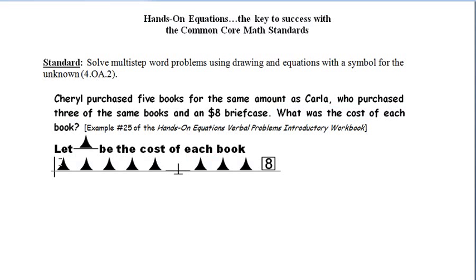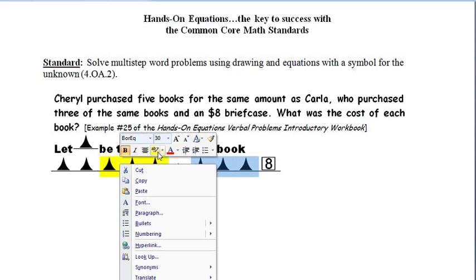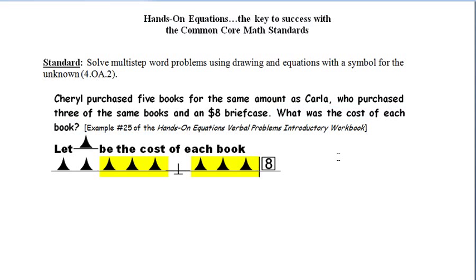Now from here you can solve the equation by realizing that you have three blue pawns on each side that you can remove. Let me highlight them just to show you, to make it clearer, that we have the same value on each side that we can remove. With the physical game pieces you could just take them off the flat balance scale, or you could erase these if you're doing it pictorially, or put arrows above the triangles. In any case, we remove three blue pawns from each side.